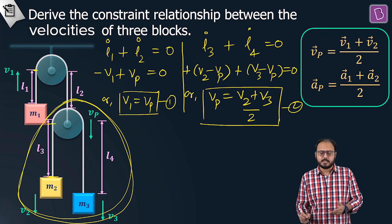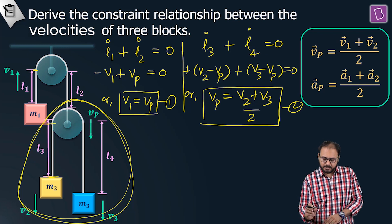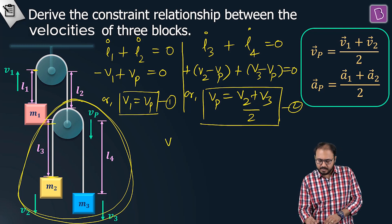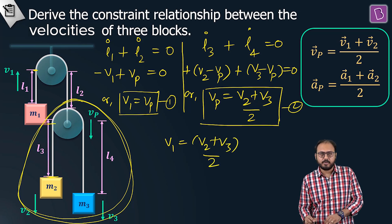So what's the constraint relation? Constraint relation is v1 equals v2 plus v3 by 2. That's the answer.